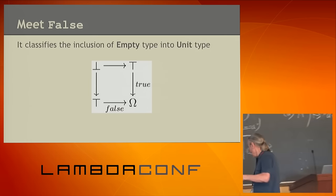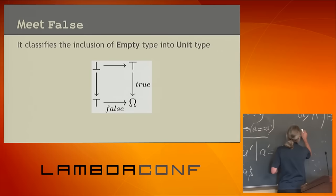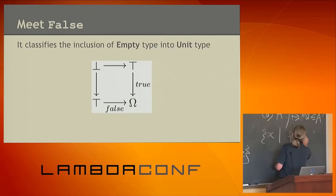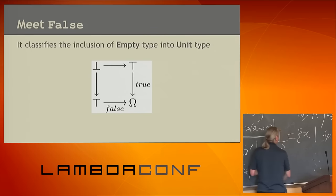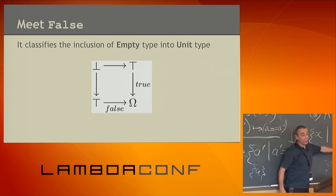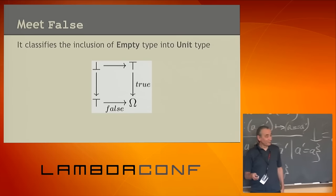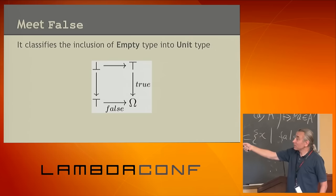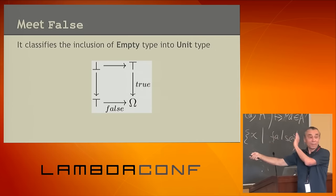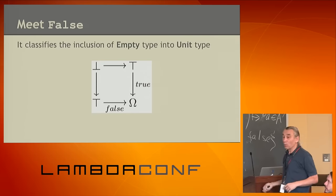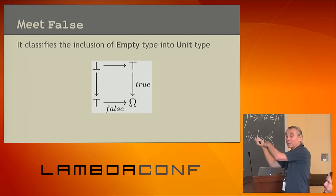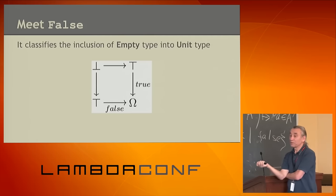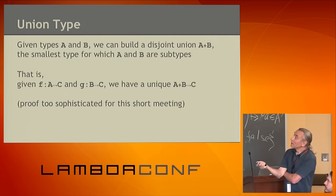Now we can build false. False is an instance of Omega that classifies the empty subtype of unit — it classifies nothing. Bottom is the set of such x's that false. There is a unique injection from any bottom into any other, so they're all essentially the same.